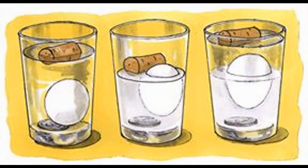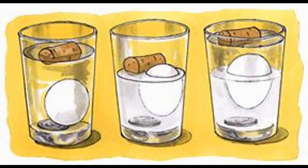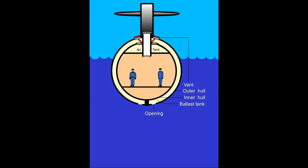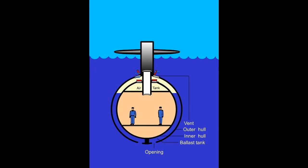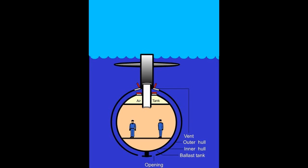Archimedes' principle applies to objects of all densities. If an object's density is greater than that of the fluid, the buoyant force is less, therefore the object will sink. And vice versa, if the object's density is less than that of the fluid, the buoyant force is high, therefore the object will float. A submarine utilizes this principle when it pumps water and air in and out to rise or sink in the water.